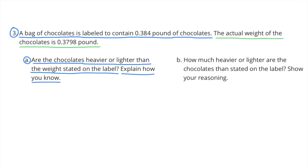Number 3: A bag of chocolates is labeled to contain 384 thousandths pound of chocolates. The actual weight of the chocolates is 3,798 ten-thousandths of a pound. A. Are the chocolates heavier or lighter than the weight stated on the label? Explain how you know.